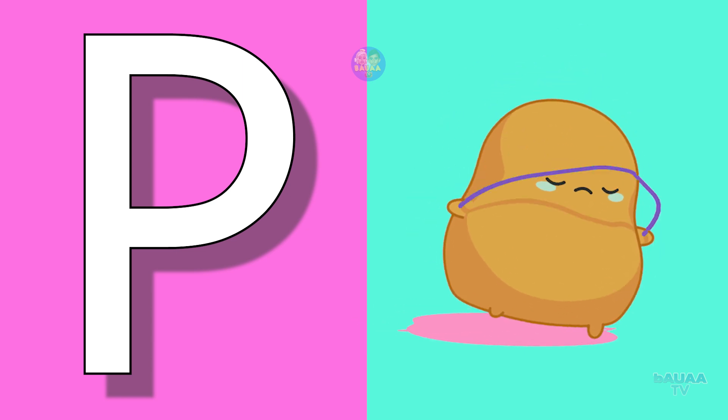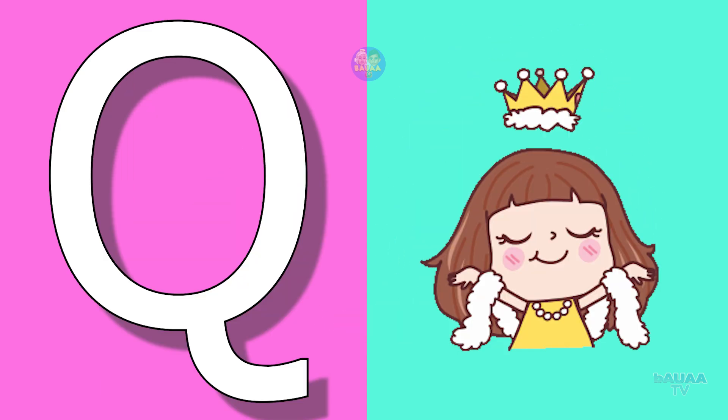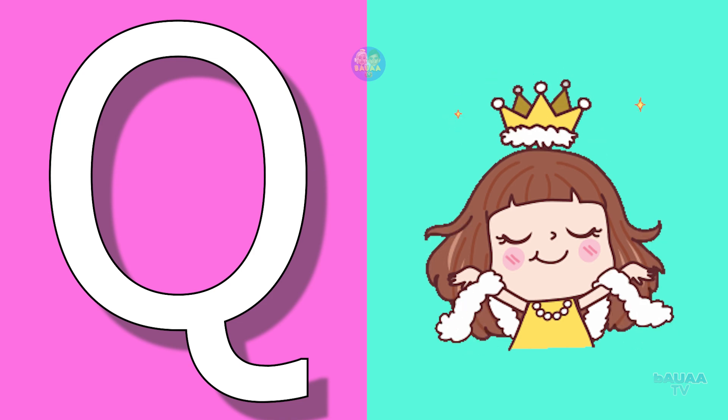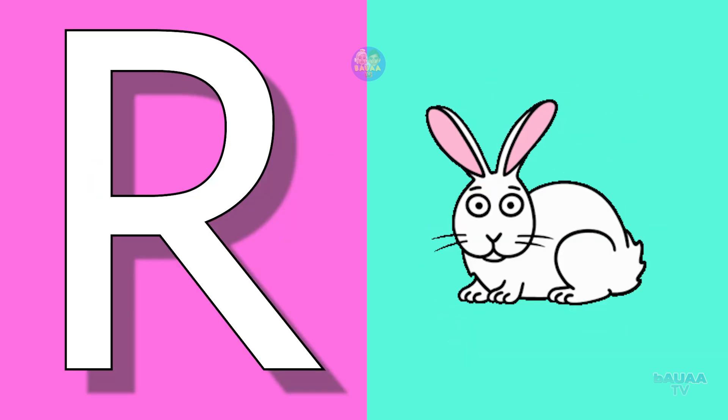T for potato, potato means aloo. Q for queen, queen means rani. R for rabbit.